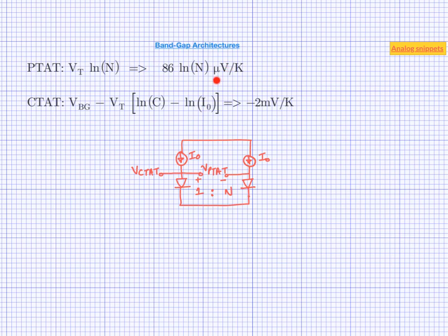We notice that in the PTAT equation we have a parameter n, which is basically the ratio of two devices or the ratio of two currents. So one simple solution may be to choose n in such a way that these two slopes become equal. Let's see what value of n will be required.